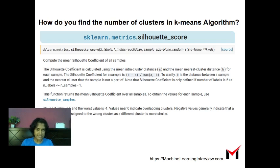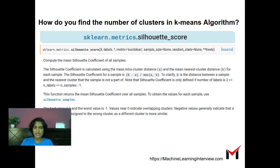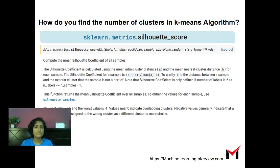We looked at two techniques to find k in k-means clustering — the elbow criterion and the silhouette score — both heuristic in nature. There are many algorithms where you don't face this challenge of choosing the number of clusters, such as DBSCAN and hierarchical clustering, which work well in use cases where k-means does not. We will look at these algorithms in a different video.